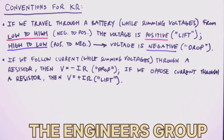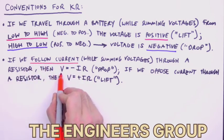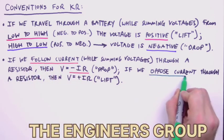So for resistors, follow the current, negative IR. Oppose the current, positive IR.